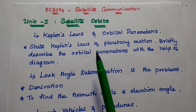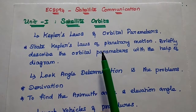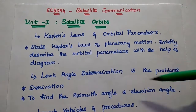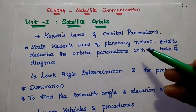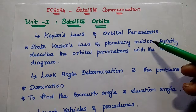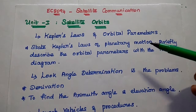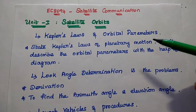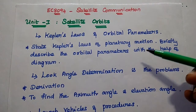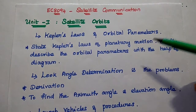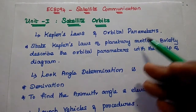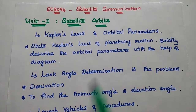We can expect questions for Part A as well as Part B. We can have problems in orbital parameters to find out the semi-major axis, to calculate the apogee height, perigee height, and orbital period.